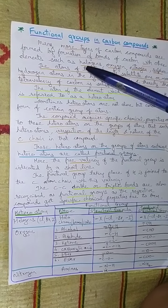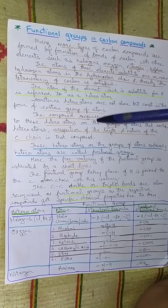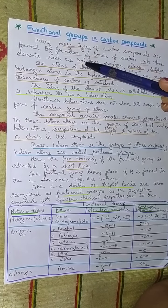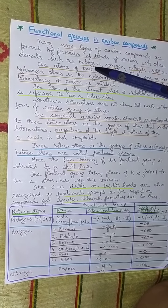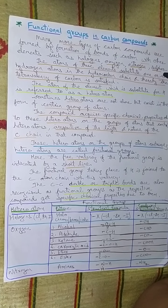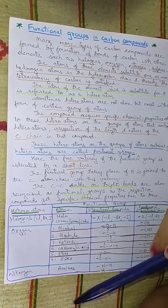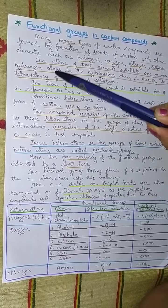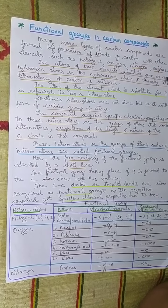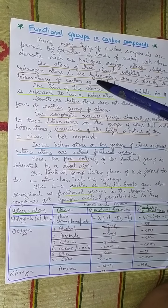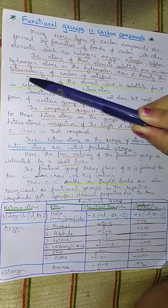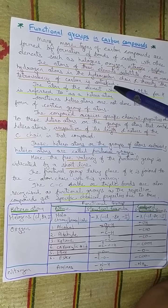So we have catenation, hydrocarbons, tetravalency, and now the next point — the formation of bonds with halogens, oxygen, nitrogen, and sulfur, through which numerous carbon compounds can be obtained. The atoms of these elements substitute one or more hydrogen atoms in the hydrocarbon chain, and thereby the tetravalency of carbon is satisfied.